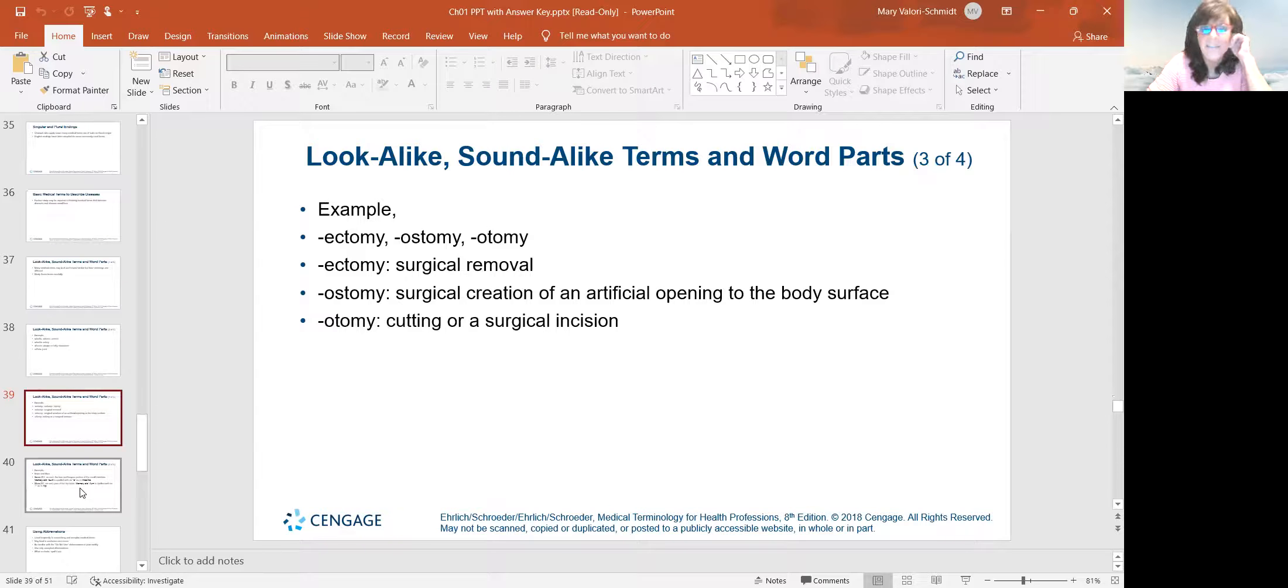Some other ones. Ectomy, ostomy, otomy. So an ectomy is a surgical removal of. He had a lobectomy. We removed the lobe of his lung. An ostomy is a surgical creating of an opening or a hole to the body's surface, a colon ostomy. An otomy is a surgical incision into something. So again, similar but very different meanings.